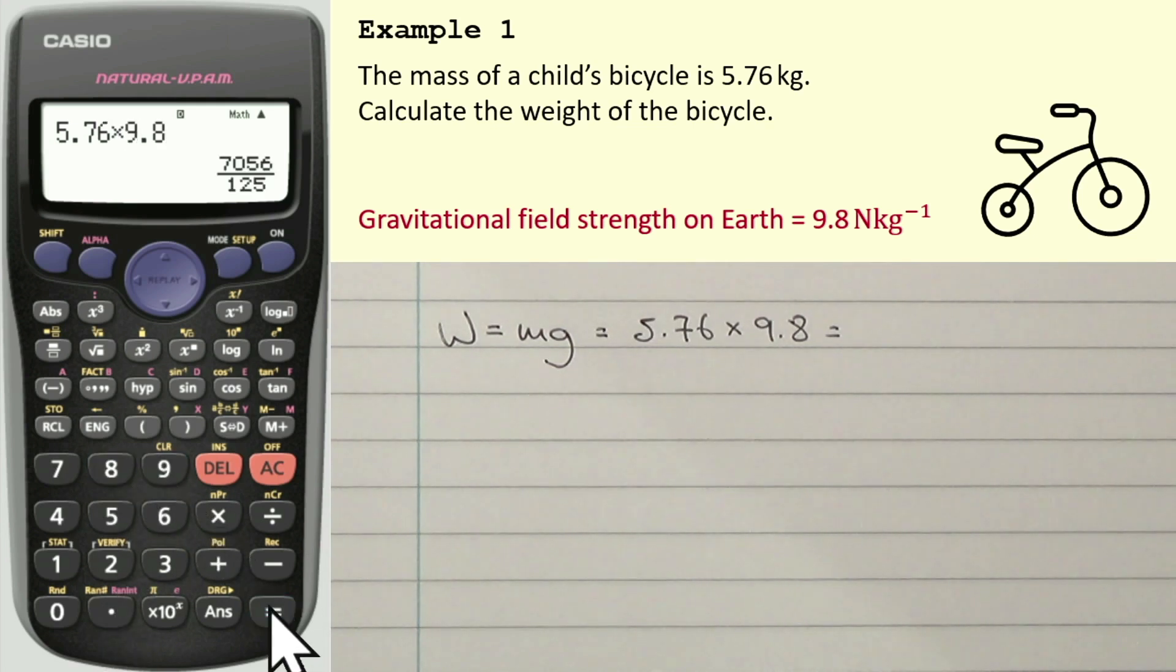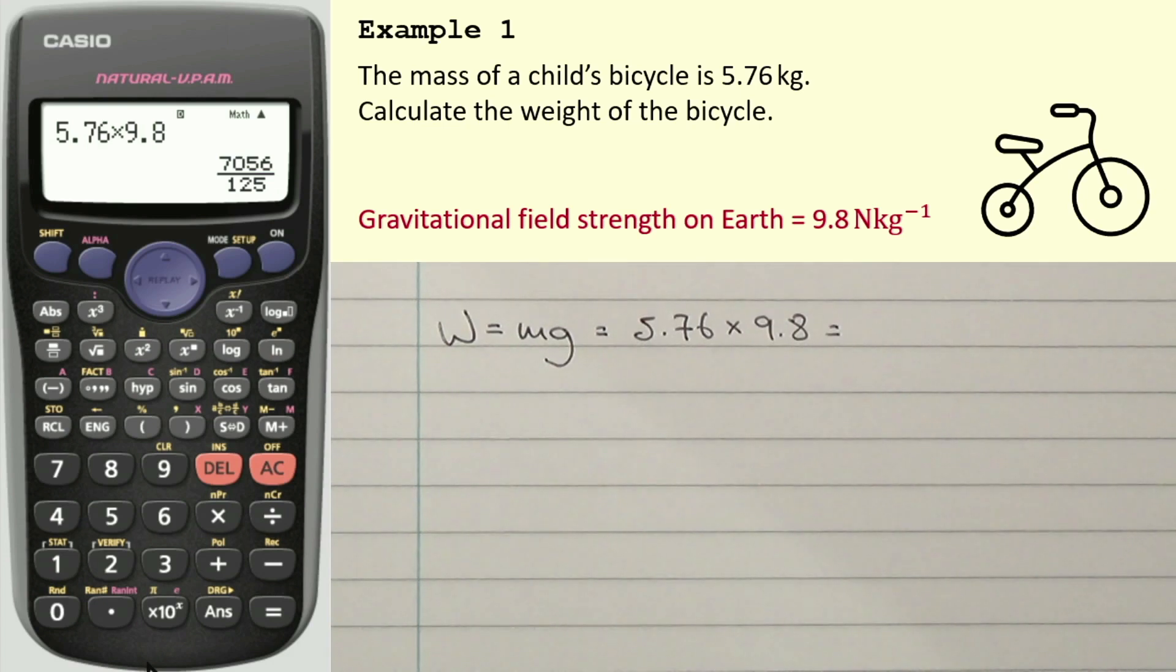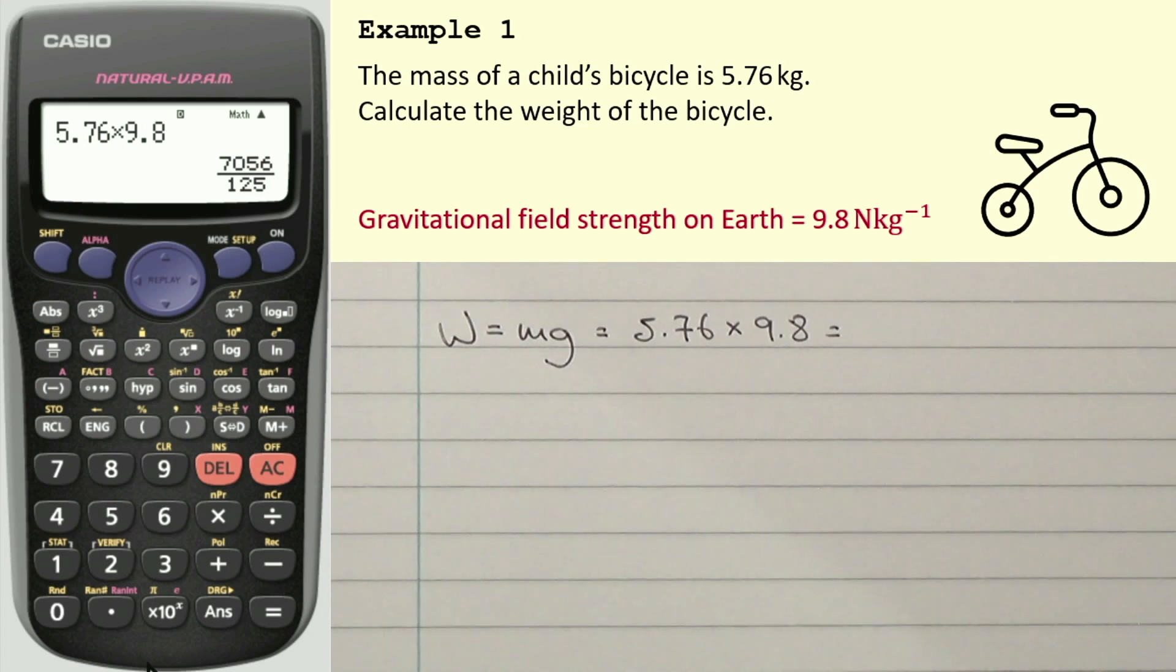So 5.76 times 9.8. And that gives us this. Wonderful. Now, first of all, don't write fractions as your final answer, because I would imagine if you were to write that number out, say, not as a fraction, but as a decimal, then that could well have a whole lot of significant figures, more than you would actually be allowed to write. So what we do in that case is we press our SD button to get that written like so.